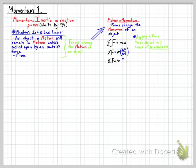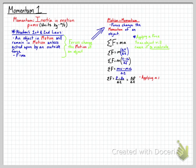We recognize that change in velocity is V minus V-naught — final minus initial — over time. We then distribute the mass to the top of our fraction, giving us mass times velocity final minus mass times velocity initial, divided by time. Knowing that momentum is mass times velocity, we substitute in final momentum P minus initial momentum P-naught, divided by time. So net force equals the change in momentum over time — proving that applying a net force will change the momentum of an object.